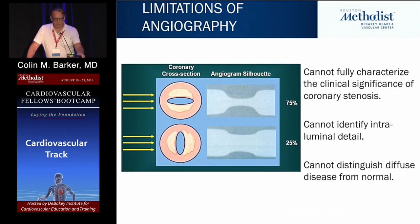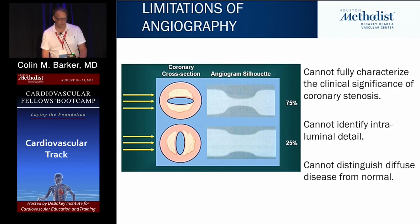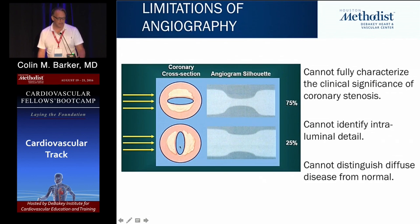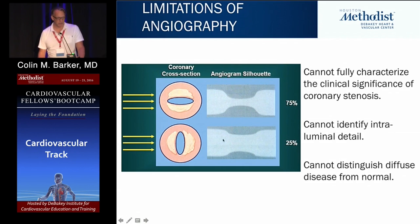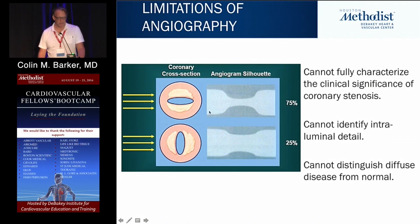As Dr. Reisner showed, there are limitations of angiography in that it's a two-dimensional luminogram. These two lesions here are actually the same lesion imaged in two different projections. In one projection it appears more significant, maybe 75 percent, whereas in another projection it doesn't appear as significant, maybe a mild lesion at 25 percent. The question is how do you determine the clinical and physiologic significance of this lesion. Furthermore, angiography cannot identify intraluminal detail or give you any idea of the pathology.